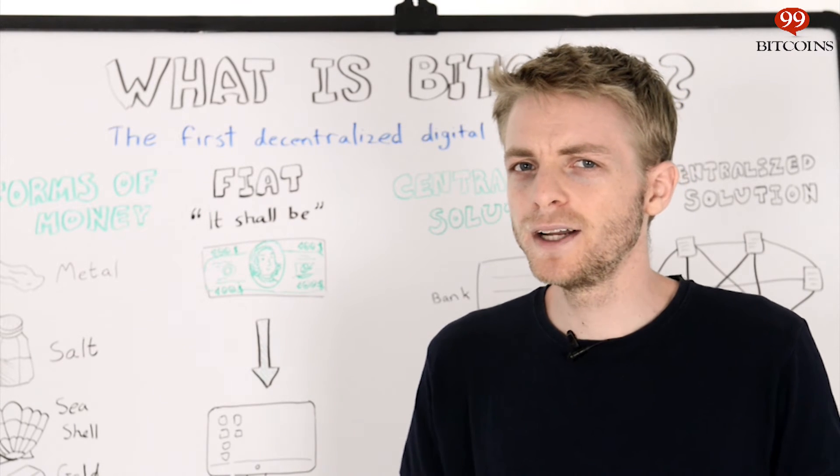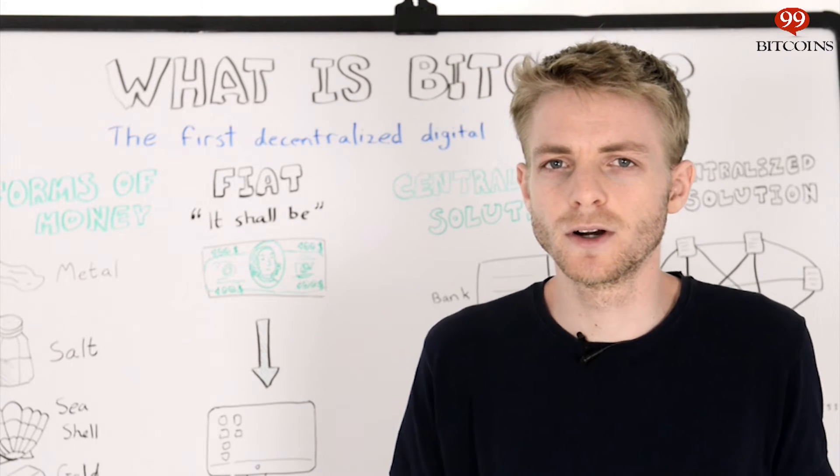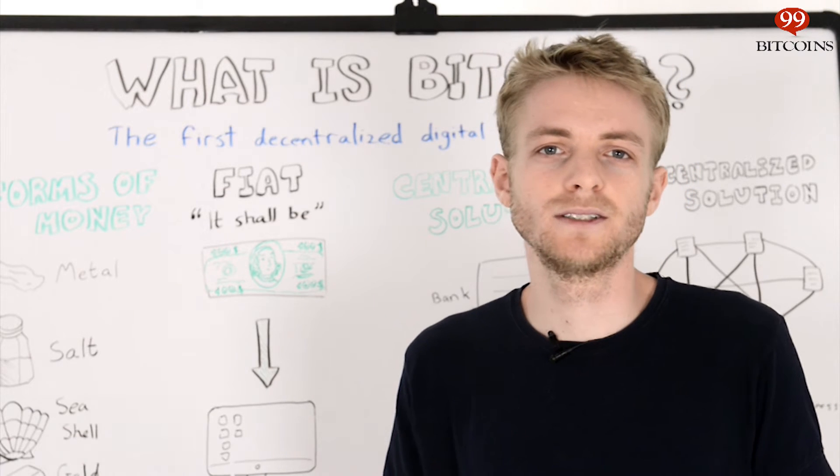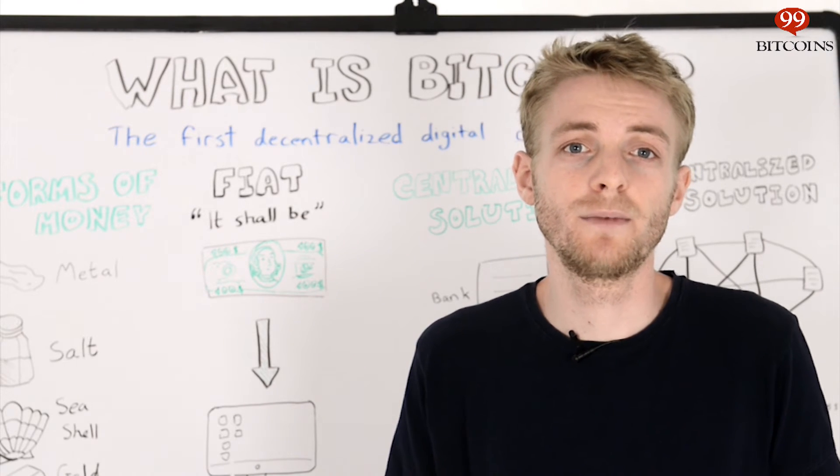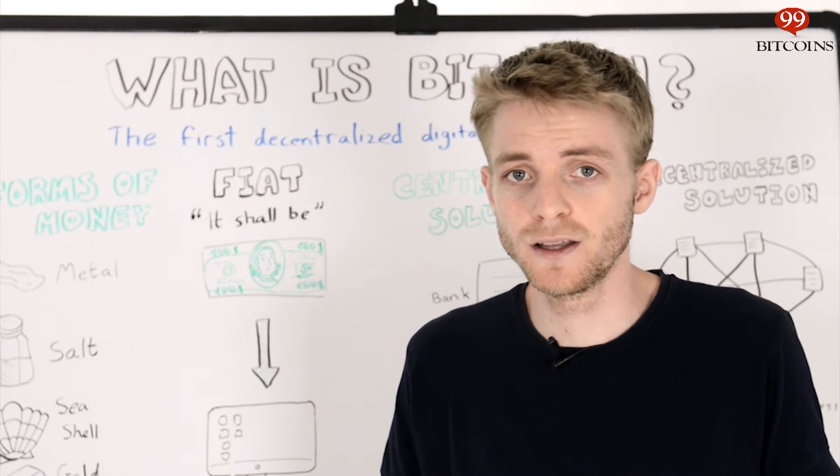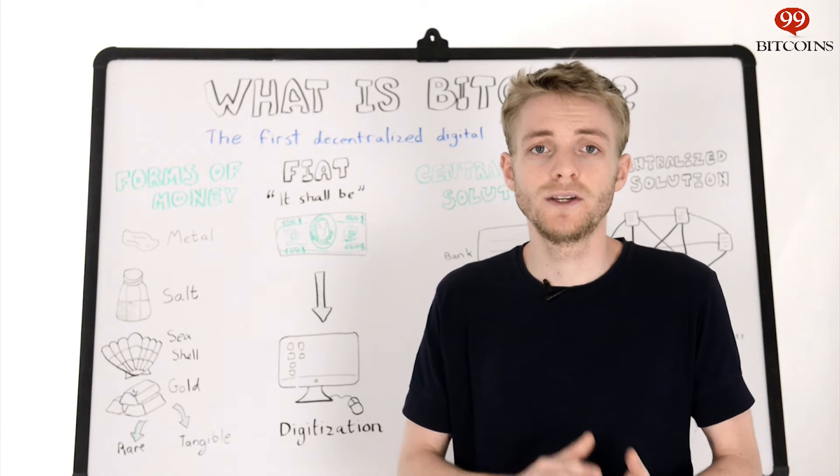Wait a minute, so if money today is digital, how does that even work? I mean, if I have a file that represents a dollar, what's to stop me from copying it a million times and then having a million dollars? This is called the double spend problem.